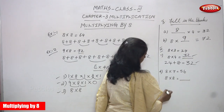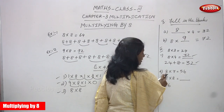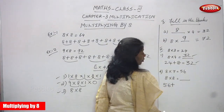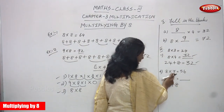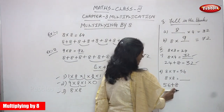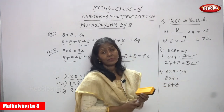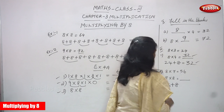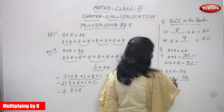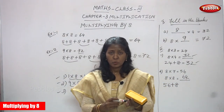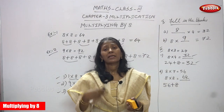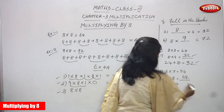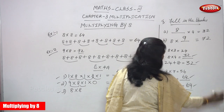8 sevens are 56. So first write 56. Then add 8 for the 8th time: put 56 in your mind, count 8 on your fingers — 57, 58, 59, 60, 61, 62, 63, 64. The answer is 64. Otherwise, use the 8th table: 8 ones are 8, 8 twos are 16, 8 threes are 24, 8 fours are 32, 8 fives are 40, 8 sixes are 48, 8 sevens are 56, 8 eights are 64. Both the addition method and multiplication method are correct.